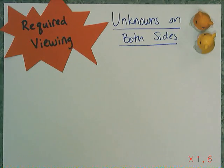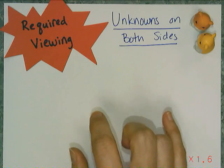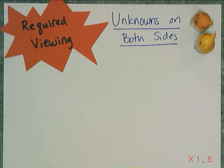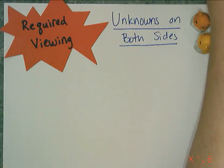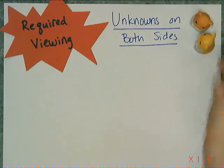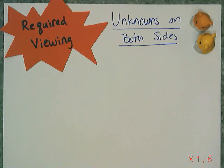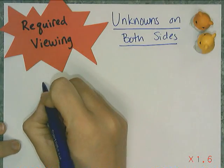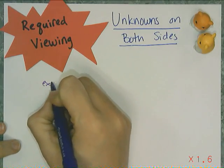Today let's look at how to solve equations where the unknown appears on both sides of the equation. These aren't horribly difficult — you just have to know how to deal with having the unknown on both sides. But you have to be super careful, because sometimes very strange things happen. We're going to start off with some basic level examples just to see the technique.